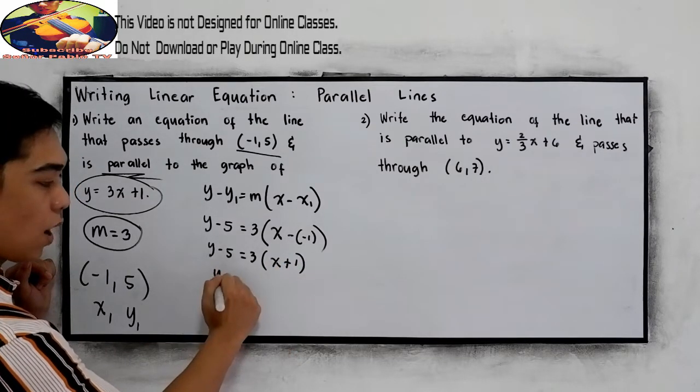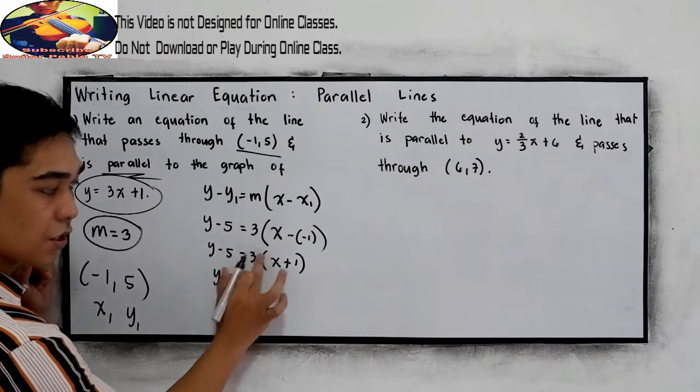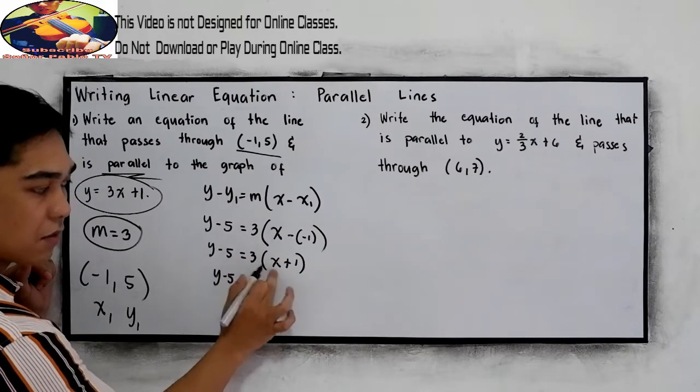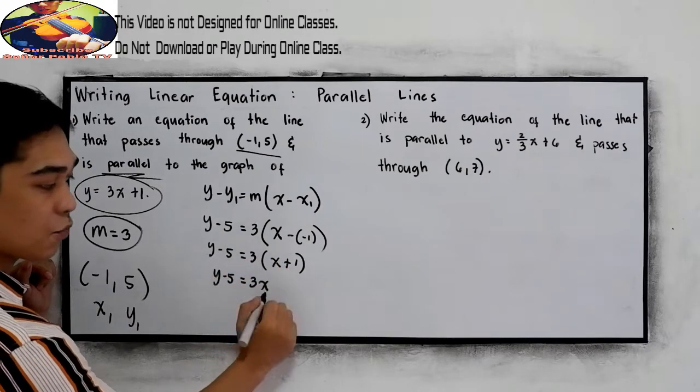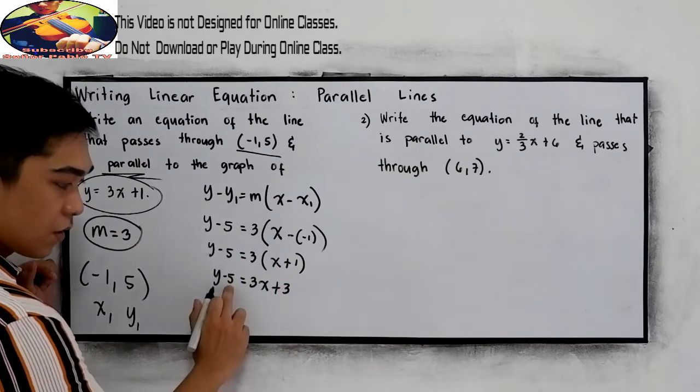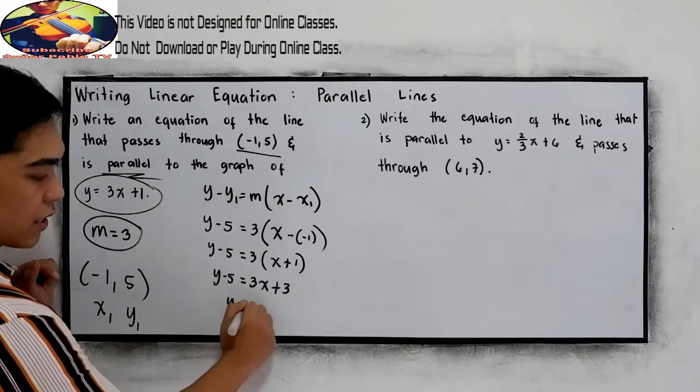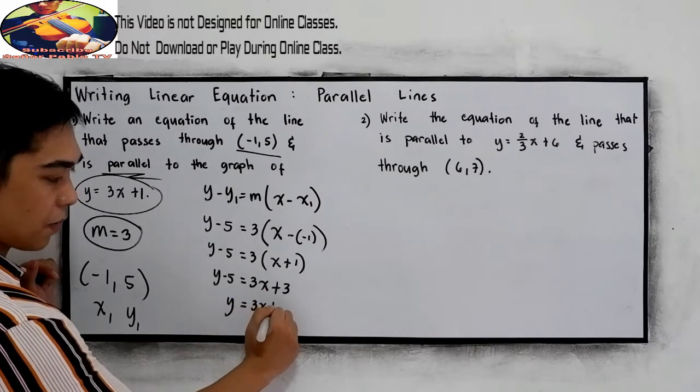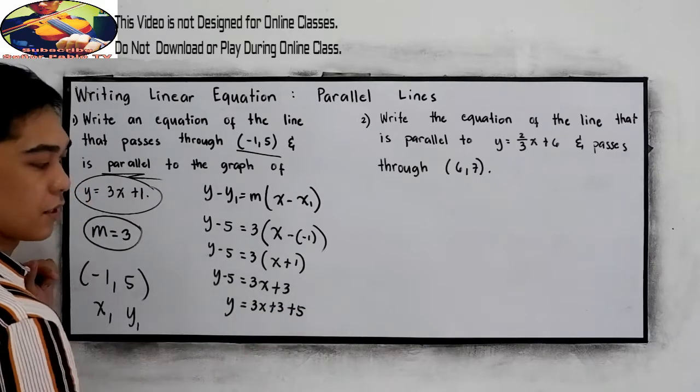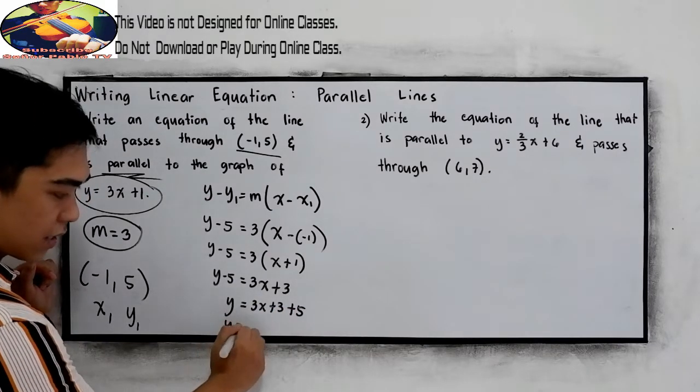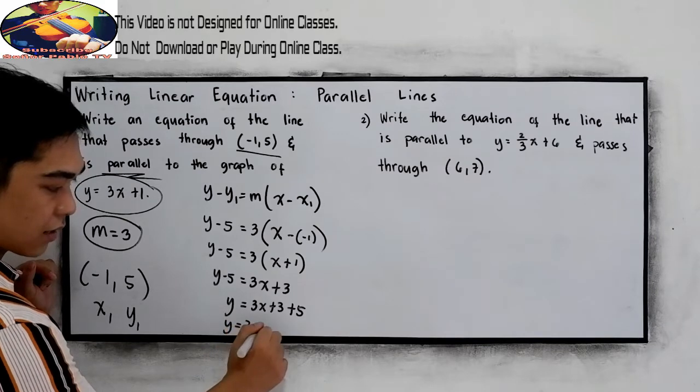y minus 5 is equal to, distributing, 3 times x is 3x, 3 times positive one is positive 3. y is equal to 3x plus 3. Using addition property of equality, plus 5. y is equal to 3x plus 8.